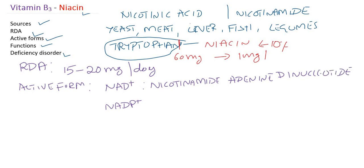NADP+ stands for Nicotinamide Adenine Dinucleotide Phosphate. So in total, there are two active forms of niacin: NAD+ and NADP+.